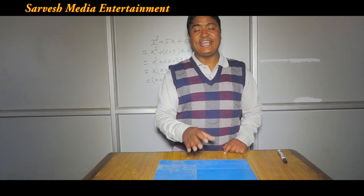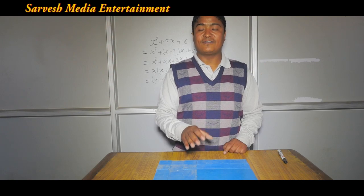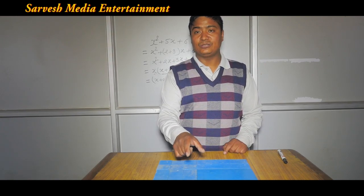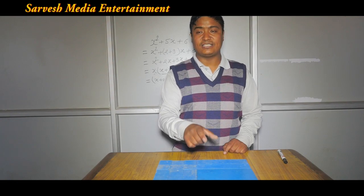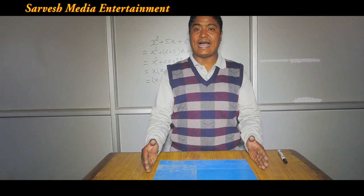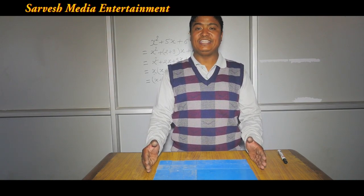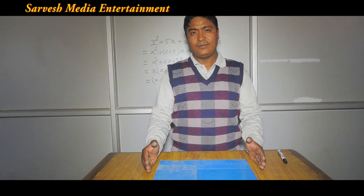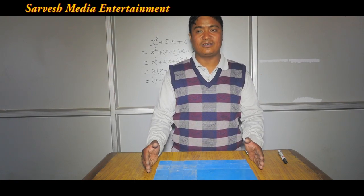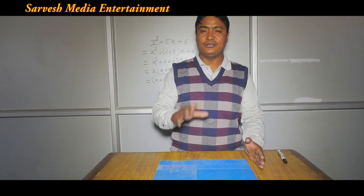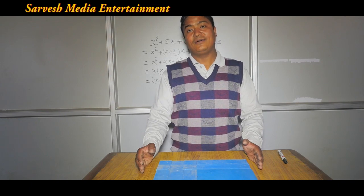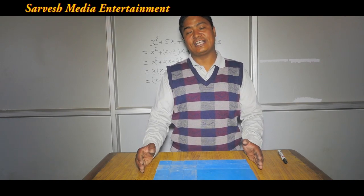This is Area equals L into B. This is a form of L into B. This means x plus 2 into x plus 3. This is x plus 3 into x plus 2 — a rectangle. The expression x squared plus 5x plus 6 is a rectangle, and its factored form is x plus 2 into x plus 3.